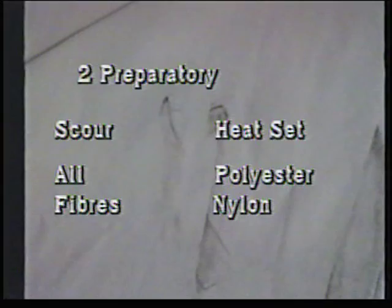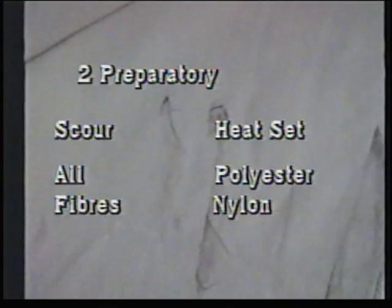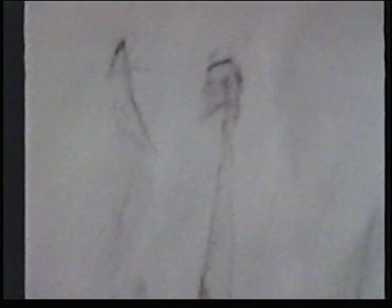This second section deals with preparatory processes, the most important of which is scouring — that is the technical term for washing or cleaning. Scouring applies to all fibres. It is important to scour dirt and oil inadvertently picked up during manufacture, since if the dirt is left on, dye resist patches will be visible. Scouring also gets rid of additives specially applied to aid spinning and knitting, which would, if left in the yarn, give rise to unlevel dyeing.